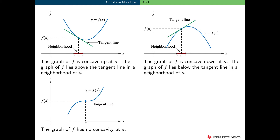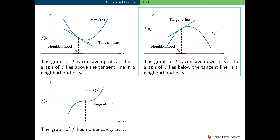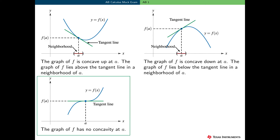Here are some graphs to illustrate this definition of concavity, and to emphasize the idea that concavity is defined at a value, not over an interval. In the first graph, the graph is concave up at x equals a — there's a neighborhood of a in which the graph of f lies above the tangent line. In the second graph, f is concave down at x equals a — the graph of f lies below the tangent line in a neighborhood of a. And here's an example in which the graph of f has no concavity at x equals a, because we can't find a neighborhood of a such that the graph of f is entirely above or entirely below the tangent line.